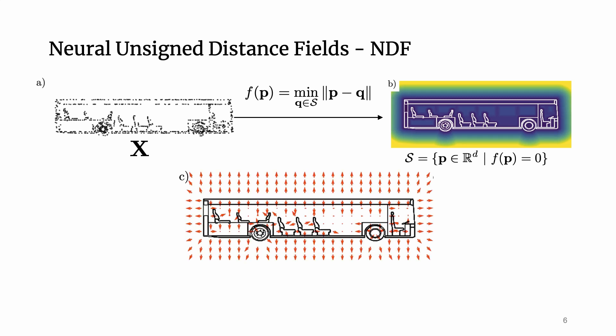To extract the surface, we use gradients of the NDF as they point in normal direction. We can efficiently compute gradients using backpropagation through the neural network.